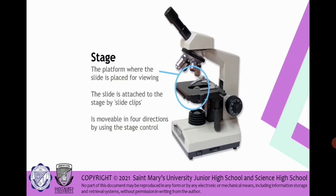Next part is what we call stage. The stage is the platform where the slide is placed for viewing. The slide is attached to the stage by slide clips and it is movable in 4 directions by using the stage control. We have left, right, and up, and down.